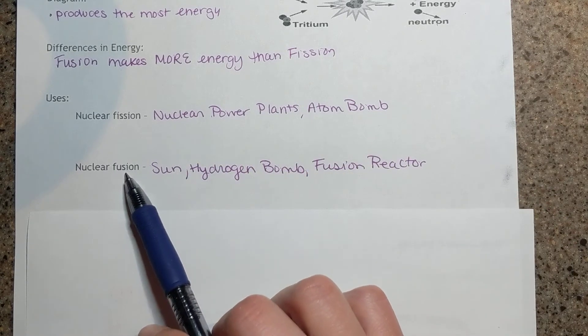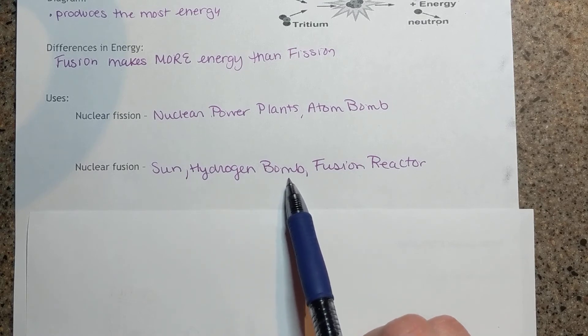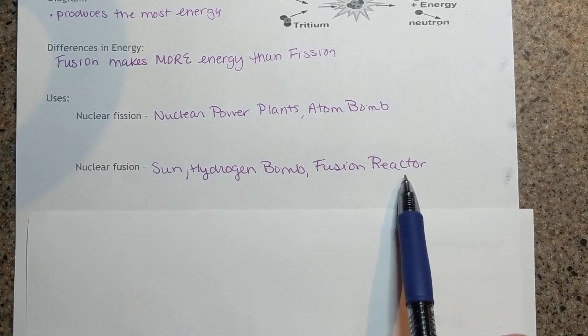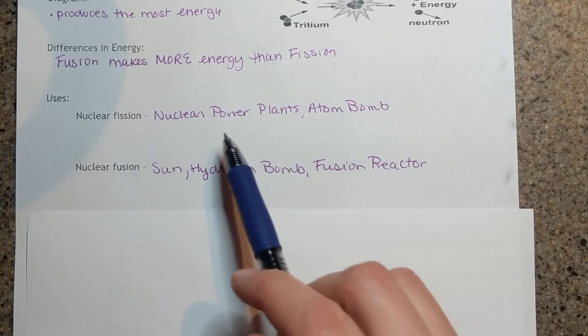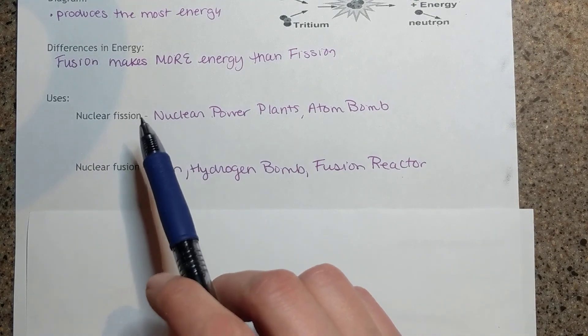Nuclear fusion occurs in the sun. This is how hydrogen bombs are made and our fusion reactors. A fusion reactor is like a nuclear power plant except using fusion instead of fission.